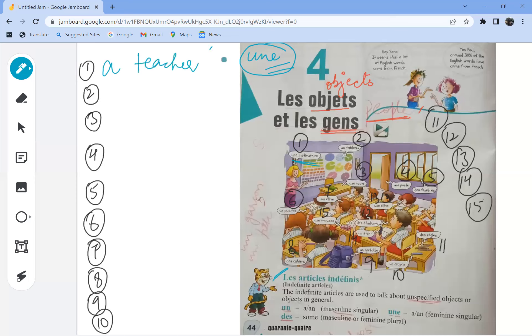Une institutrice, pour femina. Second, un tableau. Un indicates masculine singular. Un tableau is a blackboard. Number three, une table. Une is again feminine singular. Une table is a table.